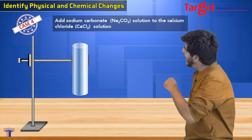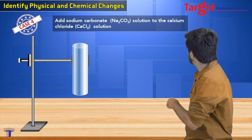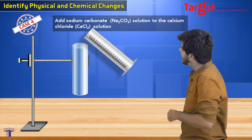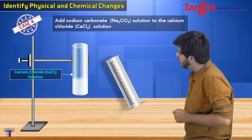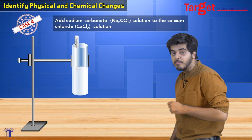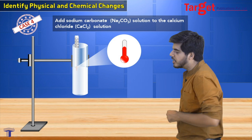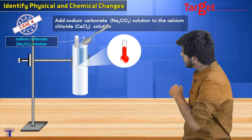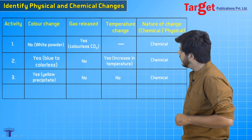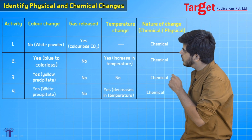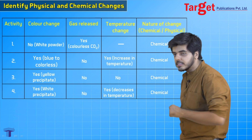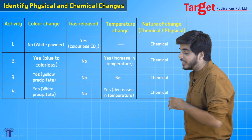Looking at the fourth case: add sodium carbonate (Na2CO3) solution to calcium chloride (CaCl2) solution. First add the calcium chloride solution, measure the initial temperature, then add sodium carbonate. The temperature is observed to decrease. Result: color change — yes, white precipitate; gas released — no; temperature change — yes, decrease in temperature; nature of change — chemical change.